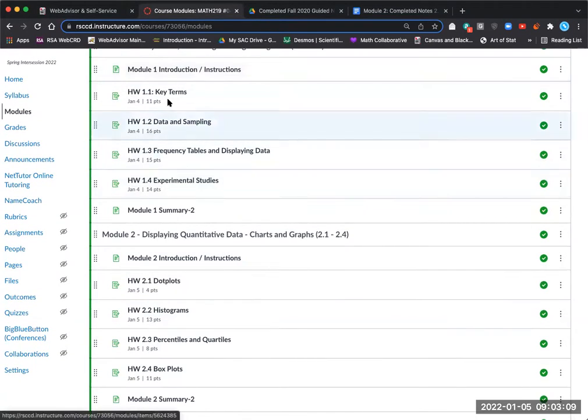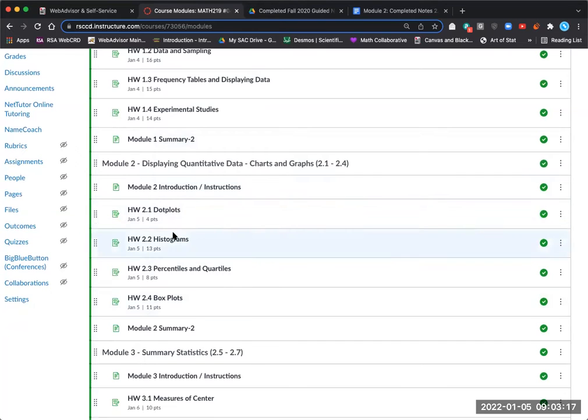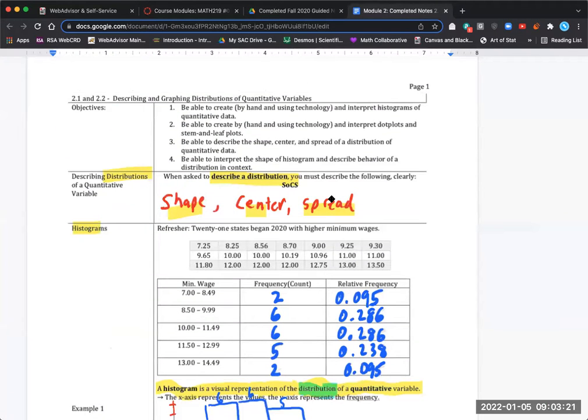We started with module one, just the idea of what is statistics, how we collect data, why we do statistics, what type of studies. And then we move into what do we do after we have data. So let's take a look at the completed guided note sheets that you have access to and my lecture videos that are aligned with this. If you need more explanation, you go ahead and look at the lecture videos that I've posted with these note sheets.